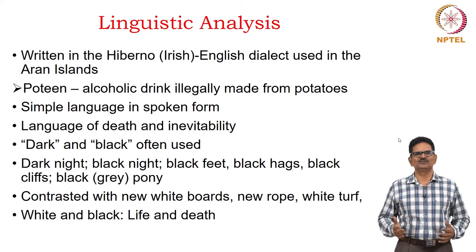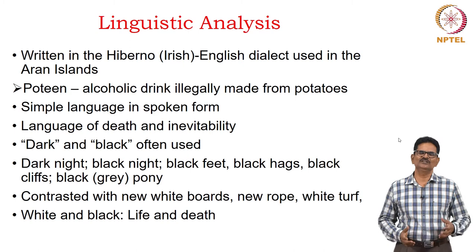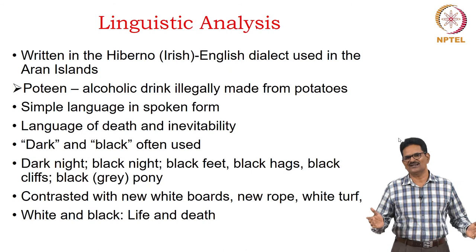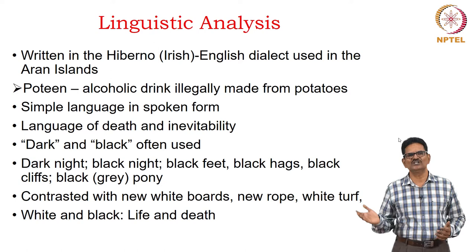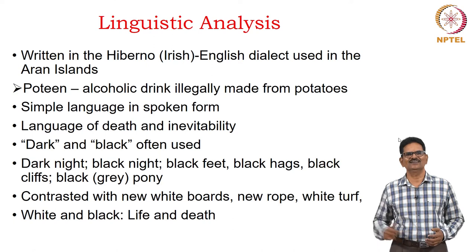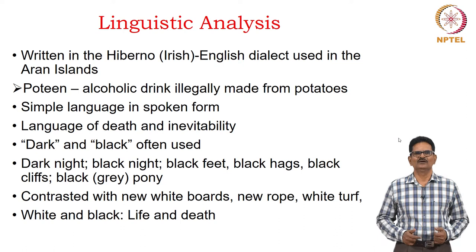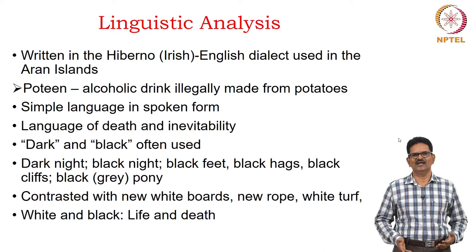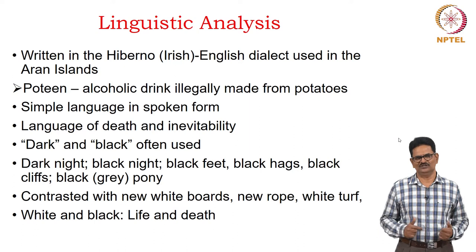Synge contributed to the Irish literary renaissance by using Irish themes, subjects, and language. He wrote the play in Hiberno-English, that is, the Irish-English dialect used in the Aran Islands. For example, the word 'poitín' means an alcoholic drink illegally made from potatoes — not found in standard English. The language is simple, in spoken form. We also have the language of death and inevitability: dark and black are often used — dark night, black night, black feet, black hags, black cliffs, black or grey pony — symbolizing death.